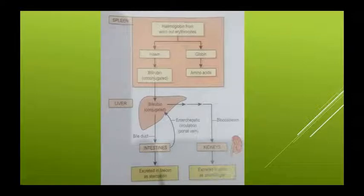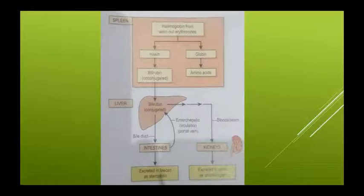यह blood से liver में जाता है — bilirubin पहले albumin के साथ bound होता है और फिर liver उसे uptake कर लेता है। Liver में bilirubin, glucuronide transferase enzyme के साथ bound हो जाता है, जिसे हम conjugated bilirubin कहते हैं।